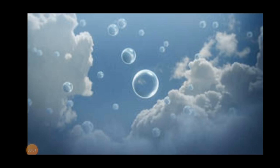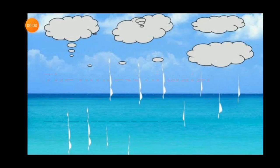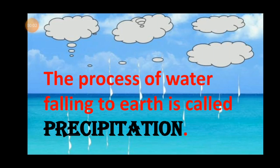Step 3: When the clouds pass through cooler air, they get cool and more droplets come together. Step 4: When clouds become heavy with water drops, they fall down on the earth in different forms. Remember, students, water comes to earth in the form of rain, snow, hailstones, etc. The process of water falling to earth is called precipitation.